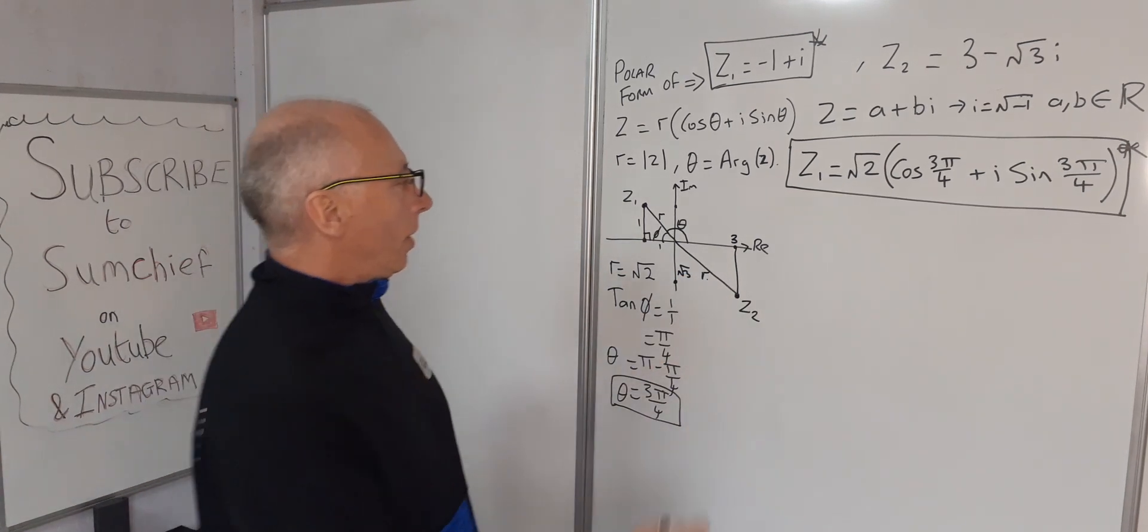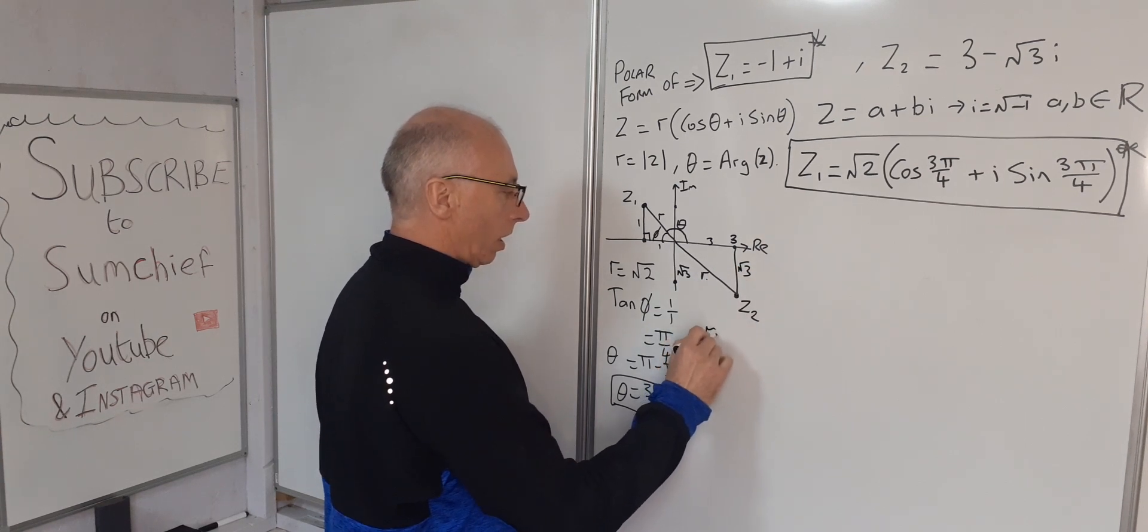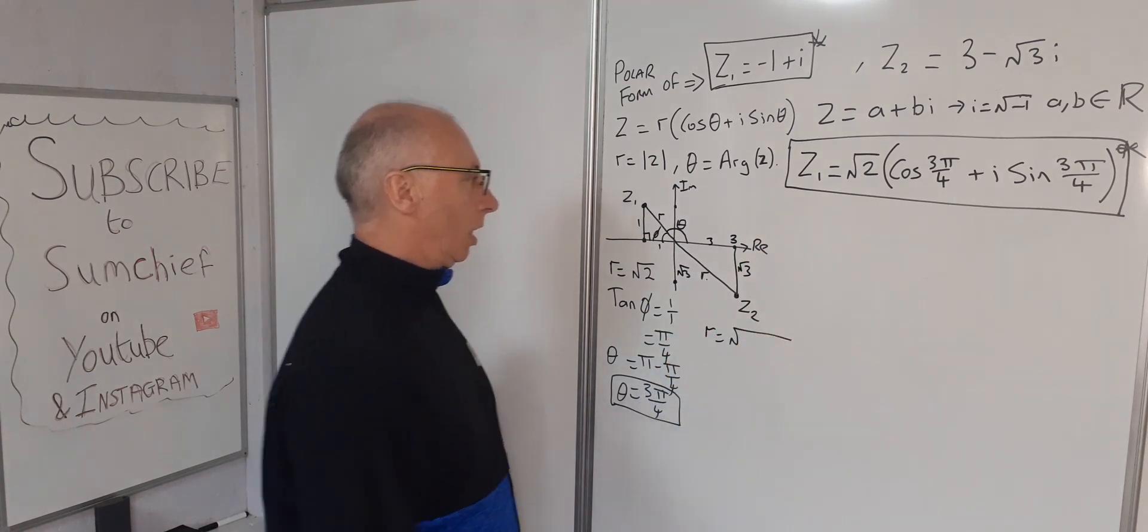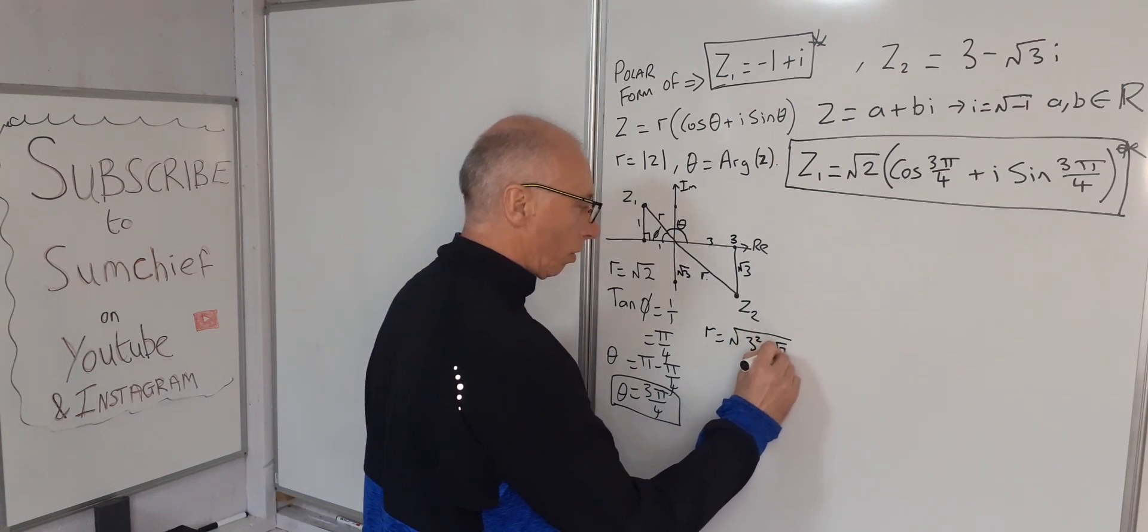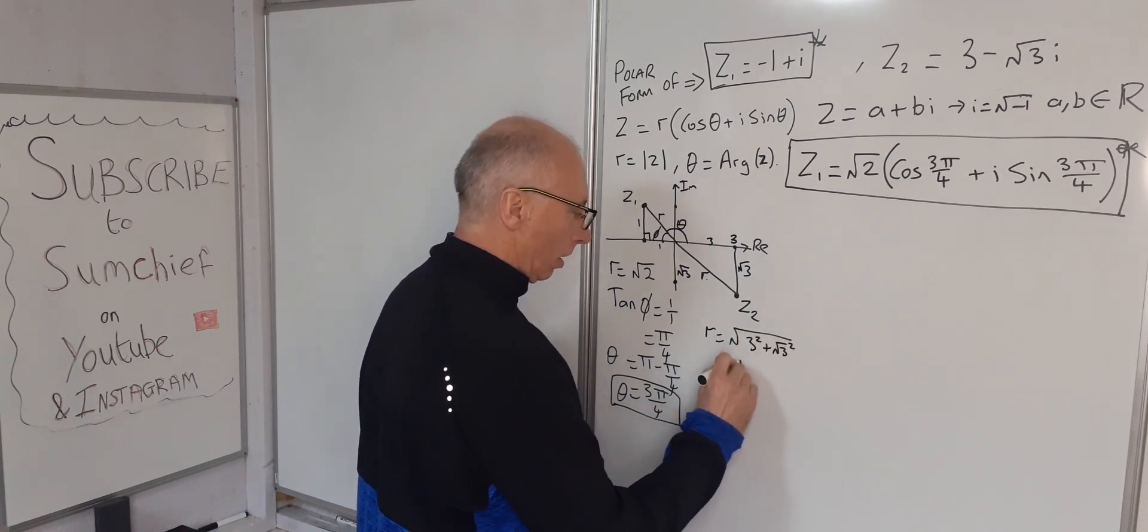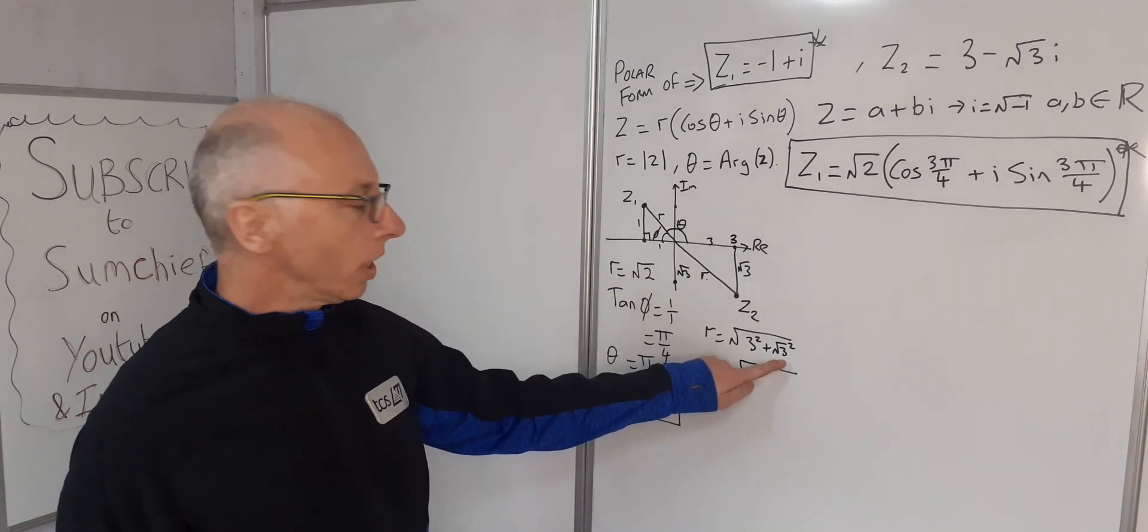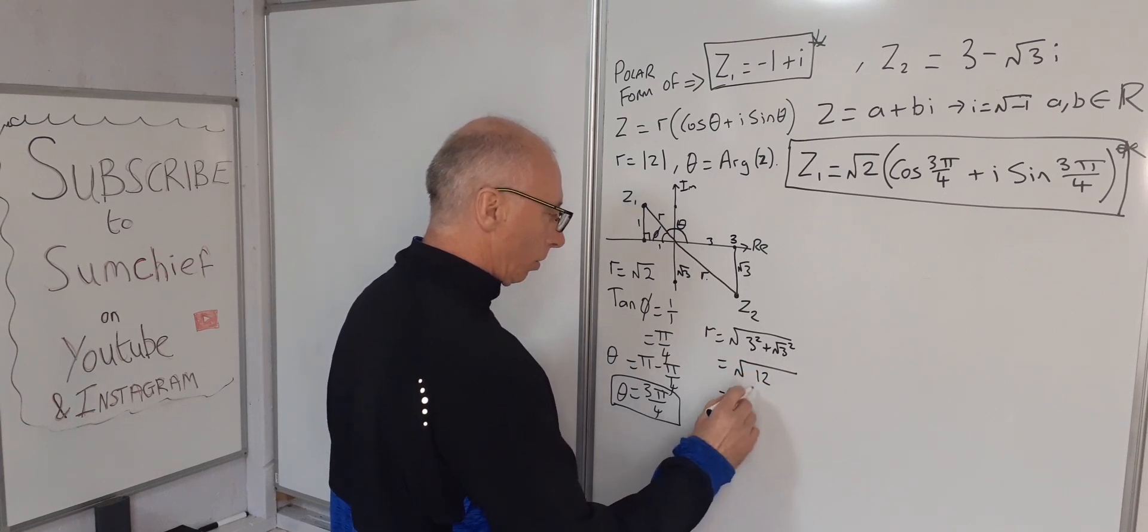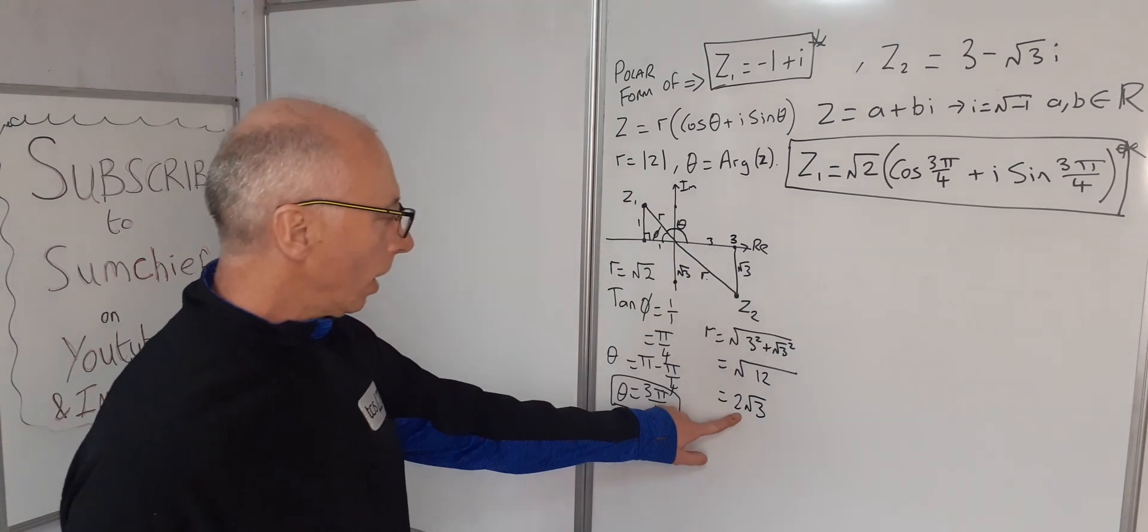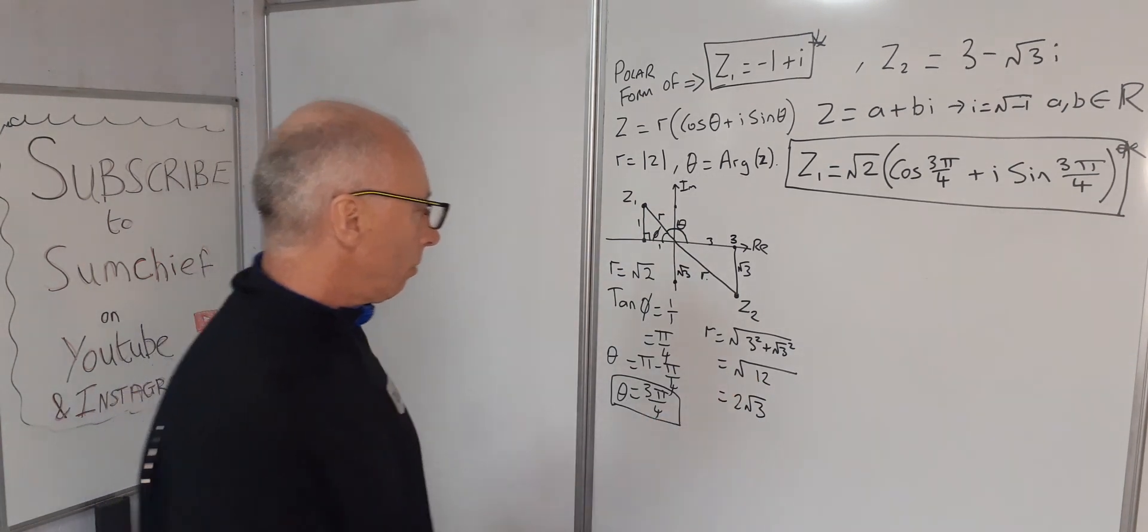Using Pythagoras, we've got 3 and √3. So r = √(3² + (√3)²) = √(9 + 3) = √12 = 2√3. That's our radius.